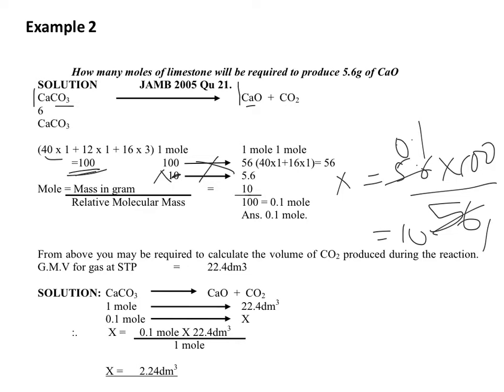You know that one mole is equal to mass in grams over relative molecular mass. To get the number of moles in 10 grams of limestone, you divide 10 over the relative molecular mass of limestone, which is 100. When you do so, you have your answer as 0.1 mole. So 0.1 mole of CaCO3 will be required to produce 5.6 grams of CaO.